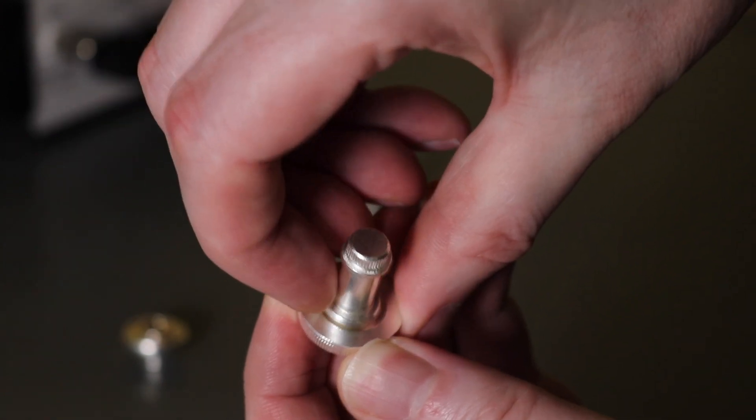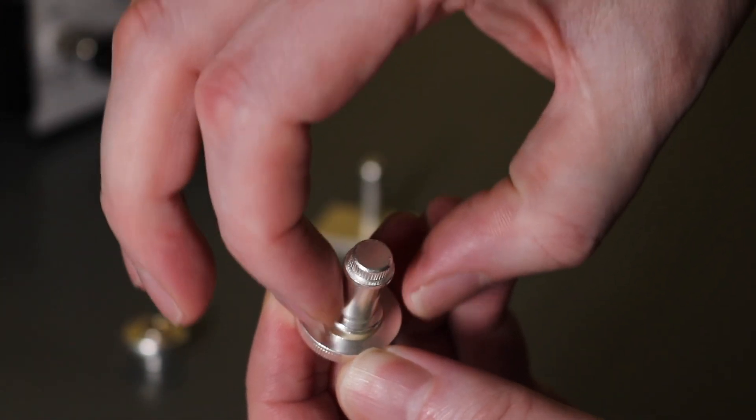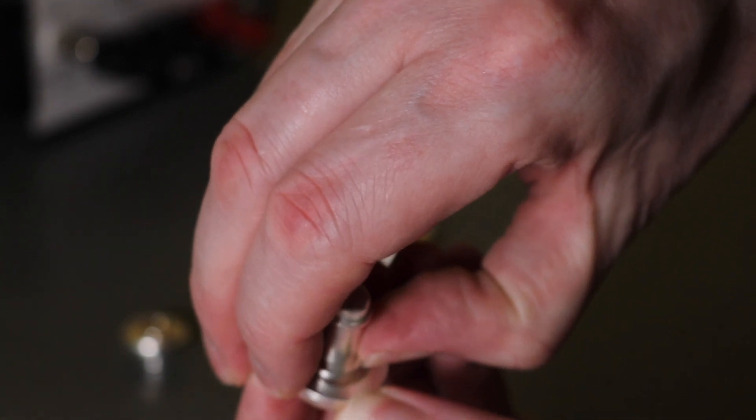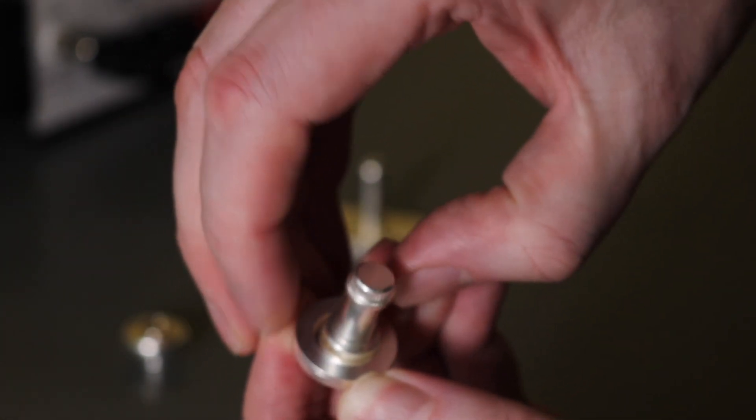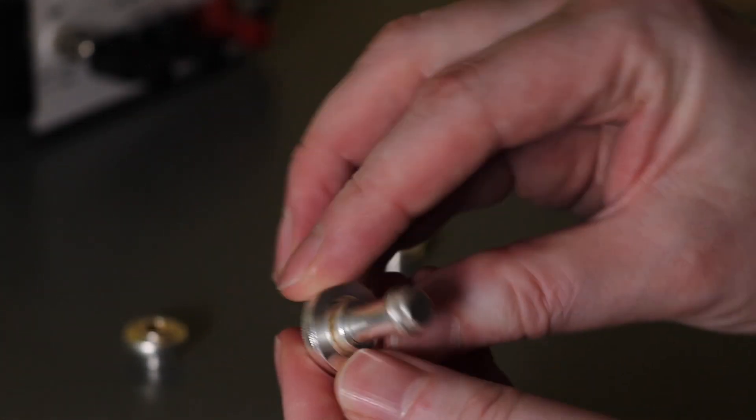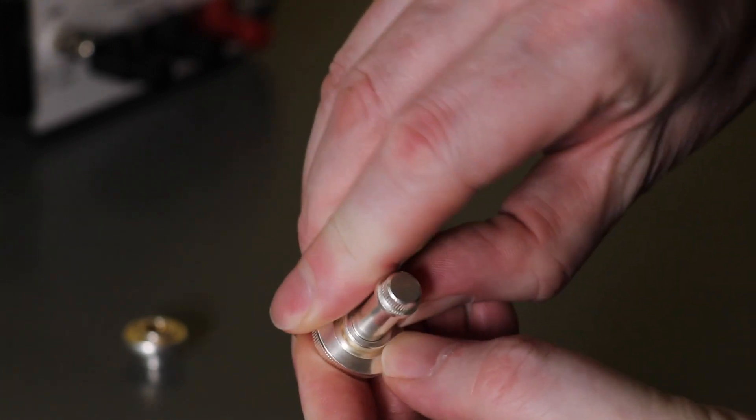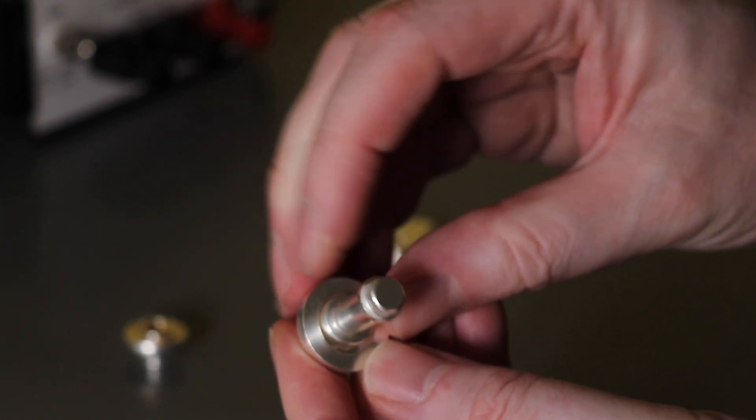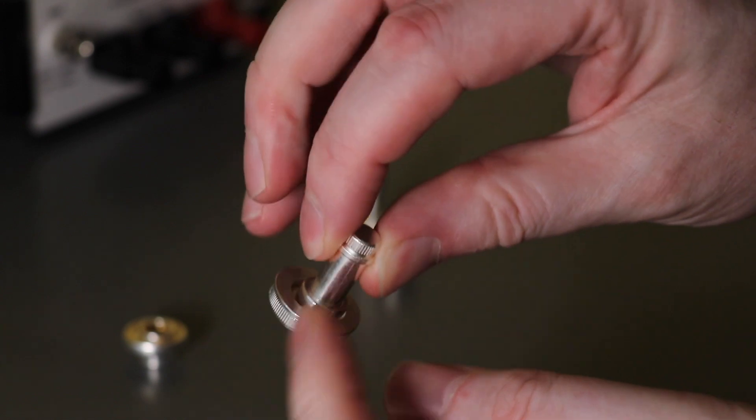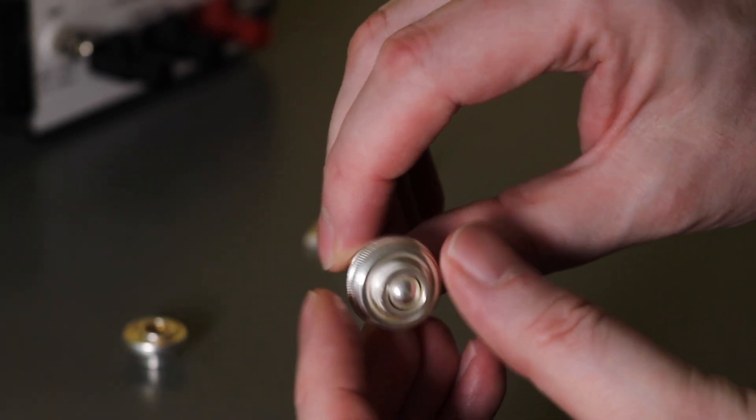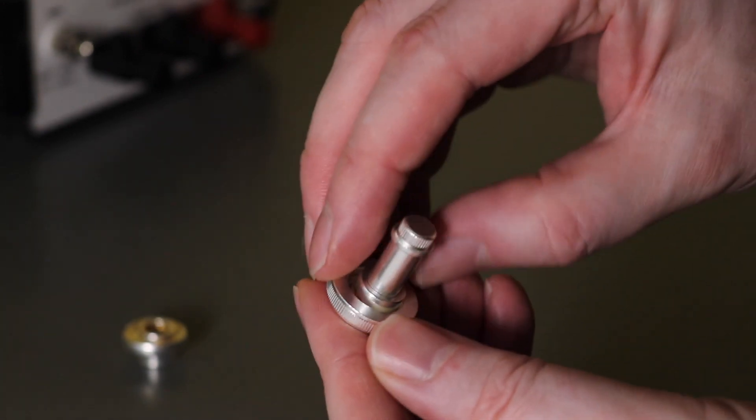So you can probably see there, the float is in the center part of the female. So if you've got any misalignment, then as you plug the two parts together this center part will move and give you the electrical contacts the correct alignment.